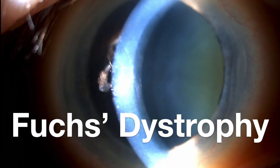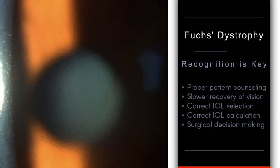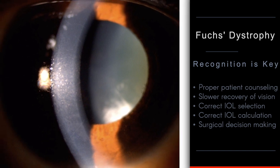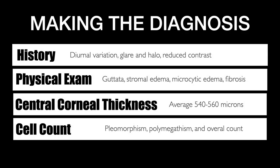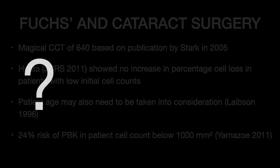Next up is Fuchs dystrophy, another common corneal dystrophy. Here we have these guttata, and the key is recognition so you can do proper patient counseling — make sure they know they may have a slower recovery of vision with cataract surgery, get the right IOL, and the right IOL calculation. The history includes diurnal variation, glare, and halo, similar to cataract but a little bit different, and you'll see the guttata and corneal swelling on exam. I like to use the 24% risk of PBK in a cell count less than 1,000. When I see cell counts less than 1,000, I start nudging the patient maybe towards a triple procedure versus encouraging cataract surgery alone.